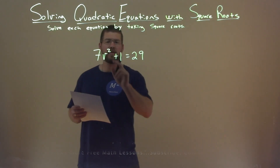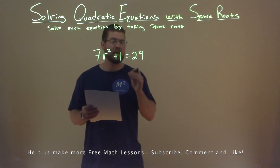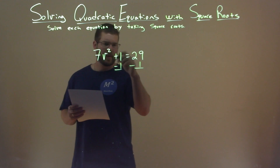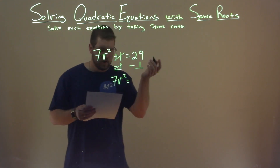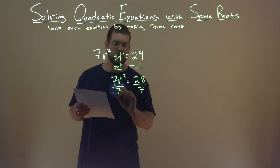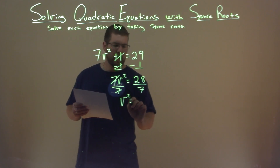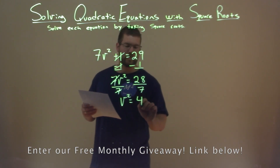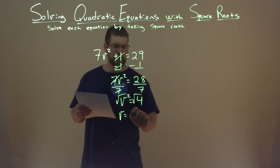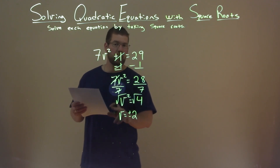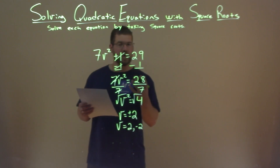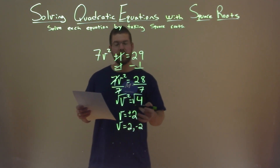We're given 7v squared plus 1 equals 29, and we want to solve this equation by taking square roots. First, I subtract 1 from both sides — that eliminates the 1, leaving 7v squared. 29 minus 1 is 28. Now 7 is being multiplied by v squared, so opposite of that is division — divide both sides by 7. V squared is now by itself, and 28 divided by 7 is 4. Taking the square root of both sides, v is now by itself, and the square root of 4 is 2 — but that's plus or minus 2. So v is a positive 2 and negative 2. Final answer: v equals positive 2 and negative 2.